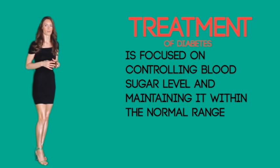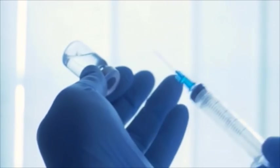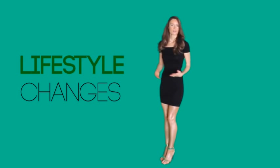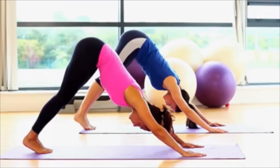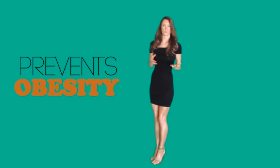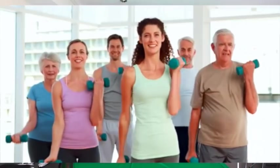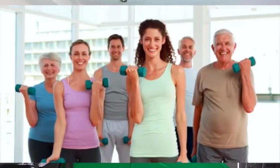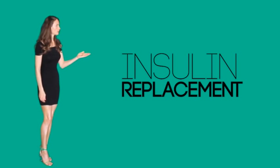Treatment of diabetes focuses on controlling blood sugar levels and maintaining them within a normal range, achieved by monitoring blood sugar, modifying diet and exercise, and using medications or insulin when necessary. Lifestyle changes include physical exercise and appropriate diet. A low glycemic index diet helps maintain blood sugar levels. Physical exercise prevents obesity and controls blood sugar — options include aerobics like dancing and walking, or resistance training like yoga and weight lifting. About 30 minutes of aerobic exercise most days of the week is effective.